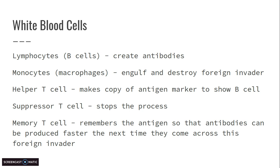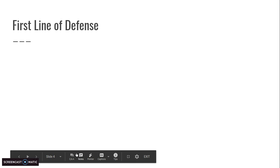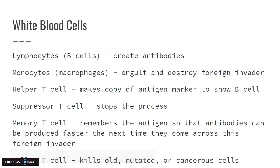We have something called a helper T cell, which makes copies of the antigen to show to our B cells — antigens to antibodies. We have suppressor T cells, which are kind of the stopping mechanism of the process. Then we have our memory T cells, which remember all the antigens and antibodies so they can produce a response faster next time. And last but not least, we have the killer T cells, which jump into the game to help kill off old, mutated, or cancerous cells.